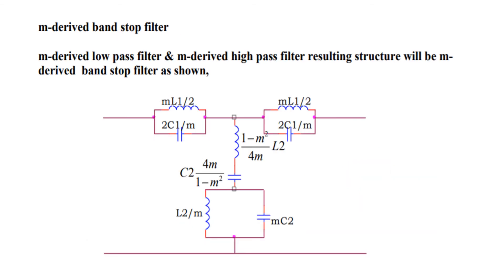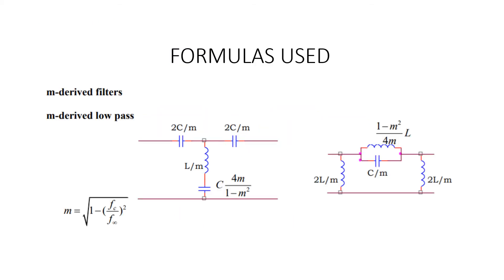Next is the M-derived band stop filter. Combining the M-derived low pass filter and the M-derived high pass filter results in the M-derived band stop filter structure, as shown in the figure.